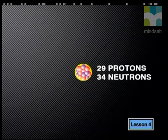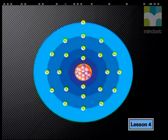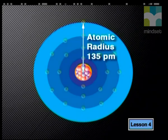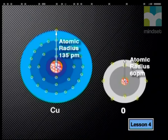To see where these forces come from, let's get some information about the size of the copper atom. The nucleus of the most common copper atom contains 29 protons and 34 neutrons, and there are 29 electrons found in four energy levels around the nucleus. The distance from the center of the nucleus to the outermost electron is called the atomic radius. The atomic radius of a copper atom is 135 picometers, which is just over two times bigger than the atomic radius of oxygen.